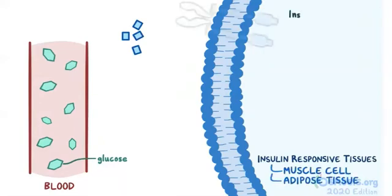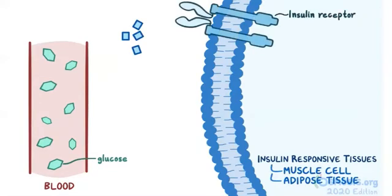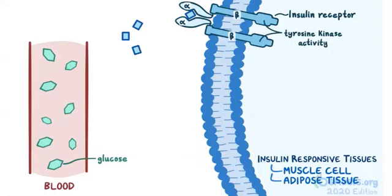This hormone binds to insulin receptors on the surface of the cell membrane. These receptors have two alpha and two beta subunits. Alpha subunits are located outside of the cell and they bind insulin, while two beta subunits are located within the cell and they have tyrosine kinase activity, which carries signals into the cell.